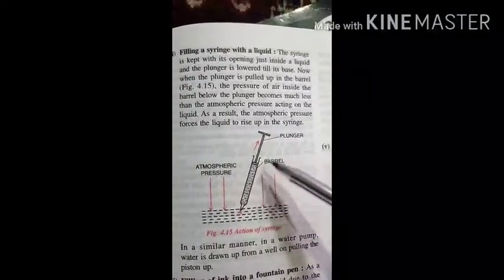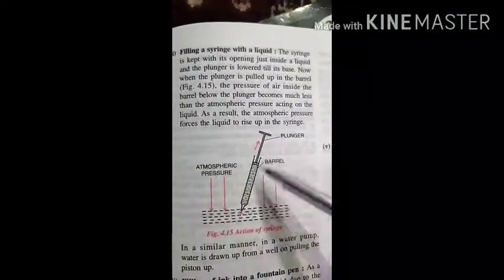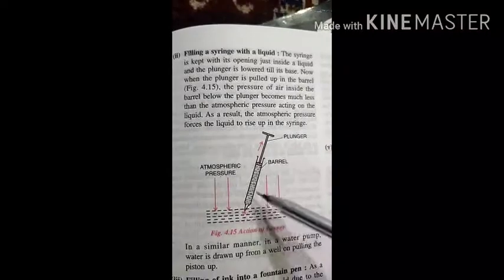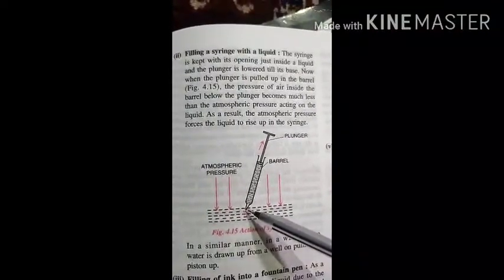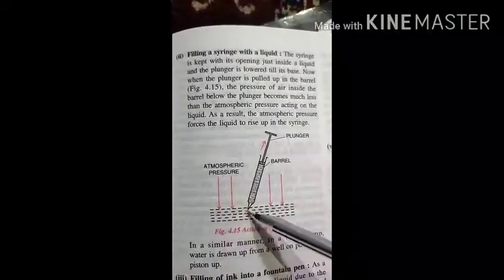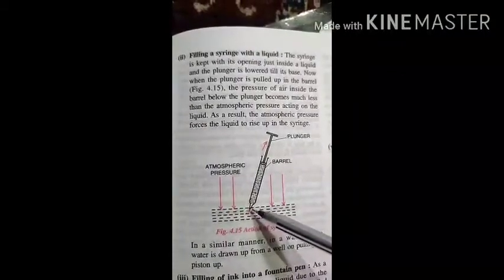of the syringe we call the barrel, and this part we call the plunger. When we have to fill the syringe, the opening is put just a little inside the liquid.